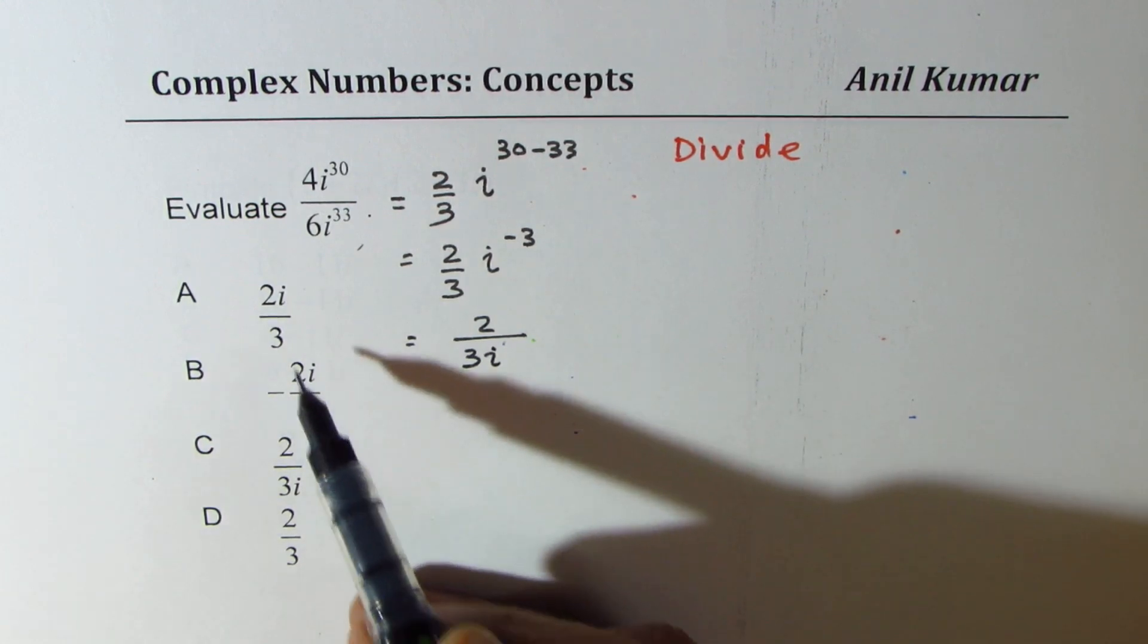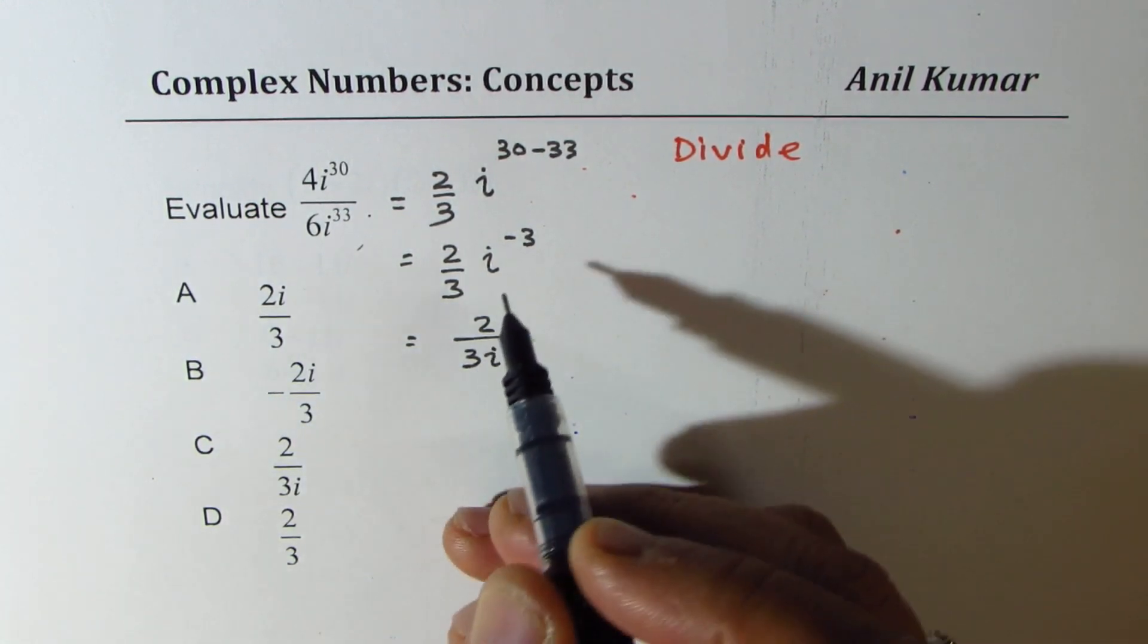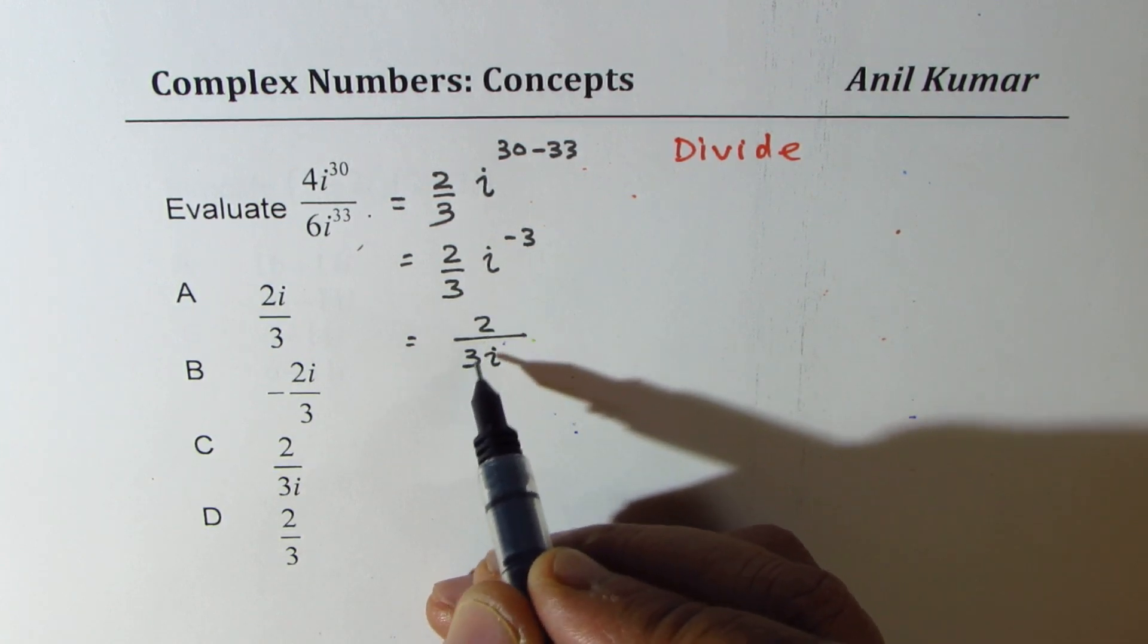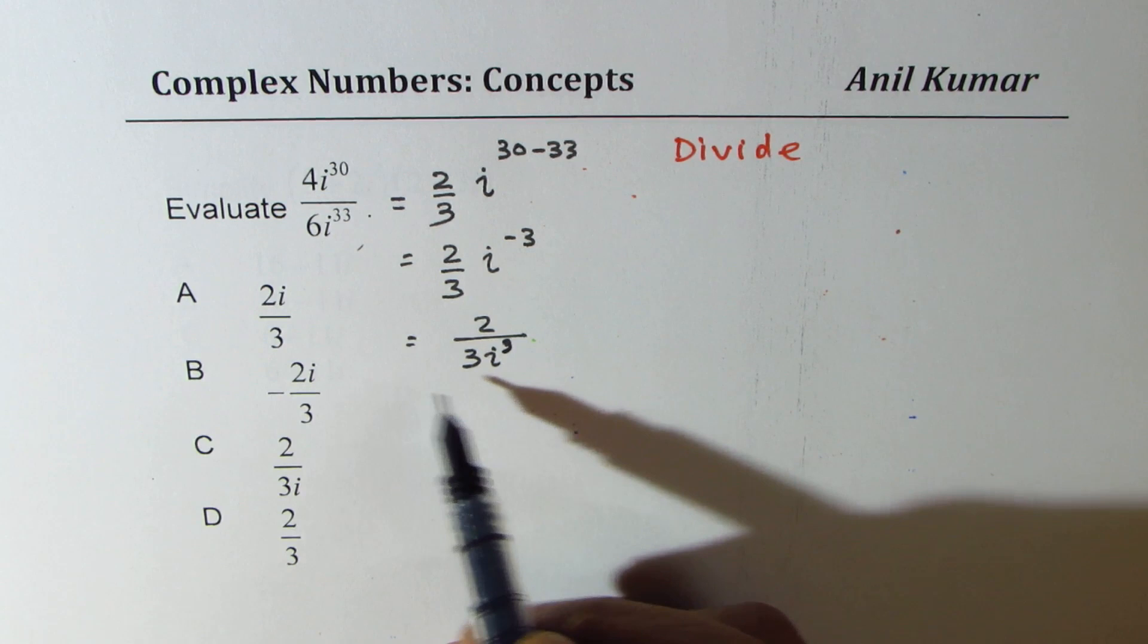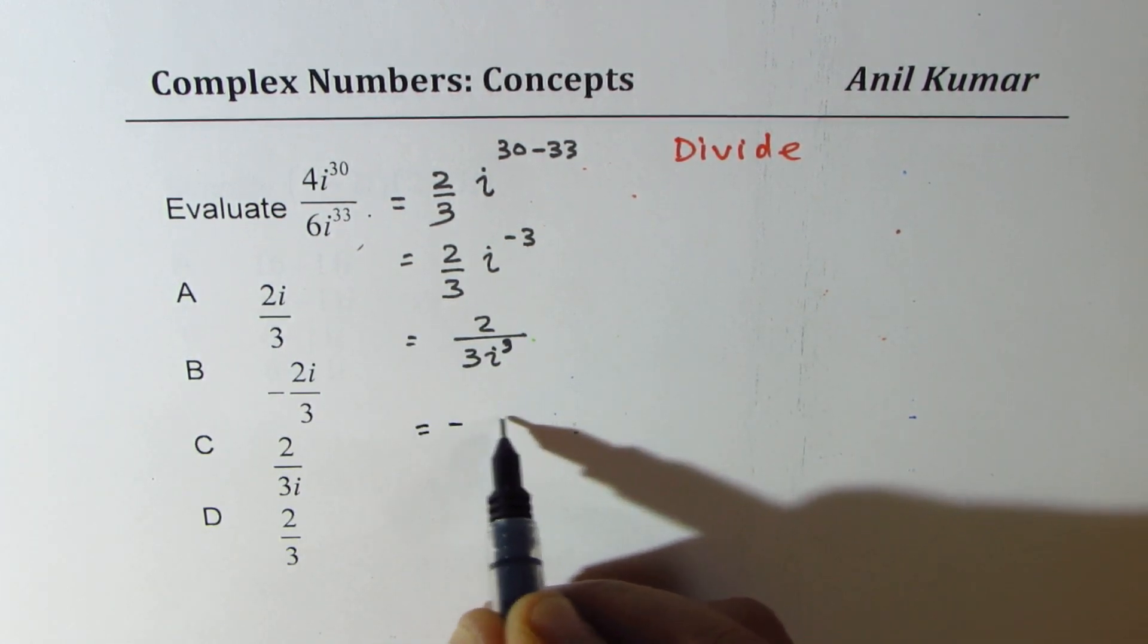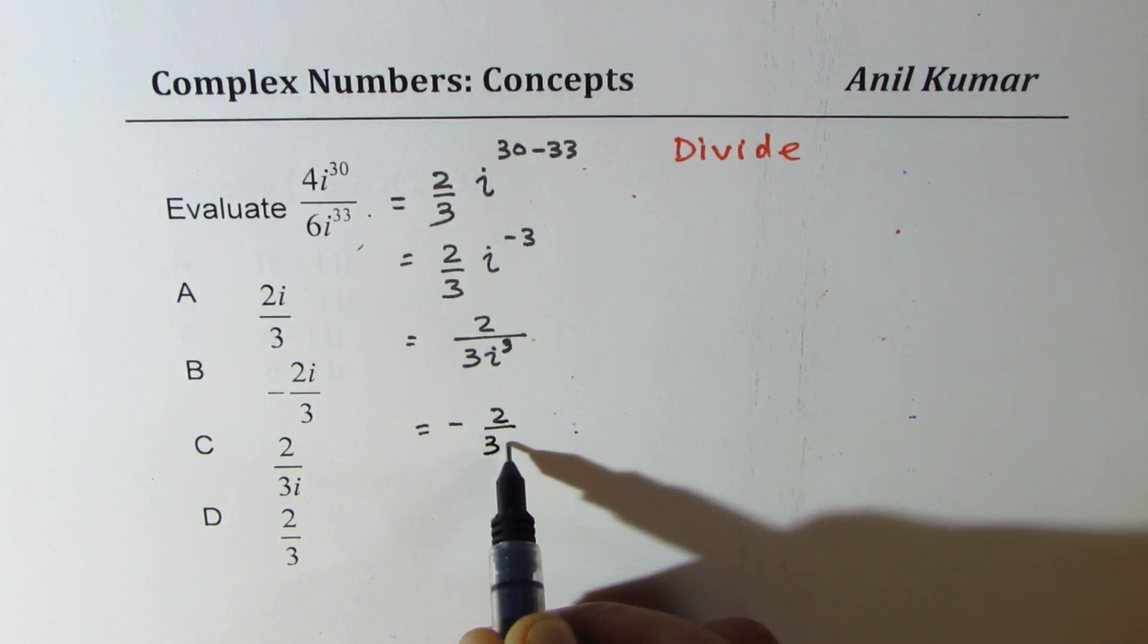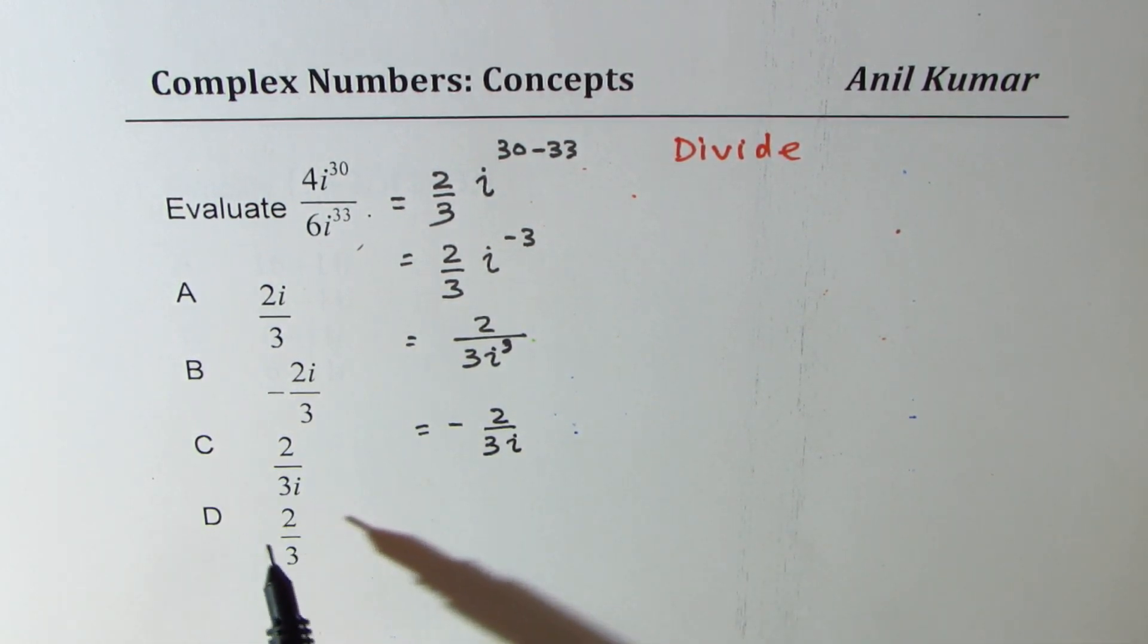Which is 2 over 3i to the power of minus 3, or 2 over 3i cubed. Now, this is not an option here. i cubed could be written as minus 2 over 3i. Now that is also not an option. So which one is the right answer? You get stuck at times.